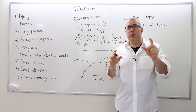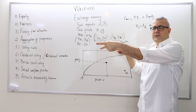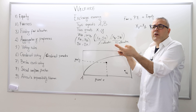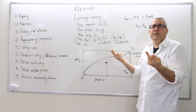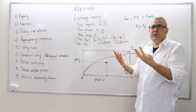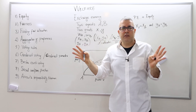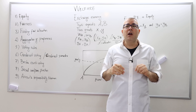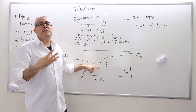Whatever the agents' utilities are, if they have exactly the same — say two apples and two bananas — there's no way I'm going to envy you, because what you have is exactly the same as what I have. Whatever my utility function is, my utility is going to be the same across these two allocations, so I'm not going to envy you and you're not going to envy me. So equal division of goods is therefore envy-free.